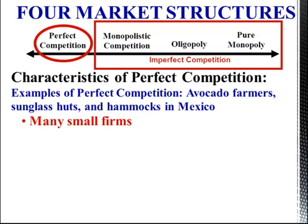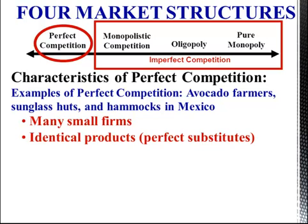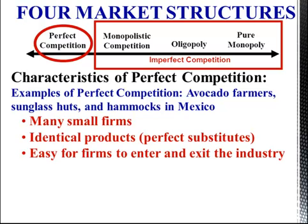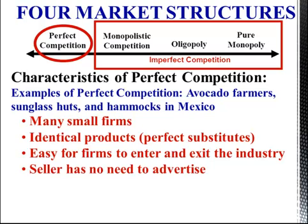The characteristics of a perfectly competitive firm include the fact that there are many small firms. Each firm will produce identical products — in fact, they're perfect substitutes, things like tomatoes, sunglasses, and avocados. It's very easy for firms to enter and exit the industry, which is why there will be lots of competition, and the seller has no need to advertise because they can sell all they want at the market price. Firms are price takers — they don't have any impact on the price at all.